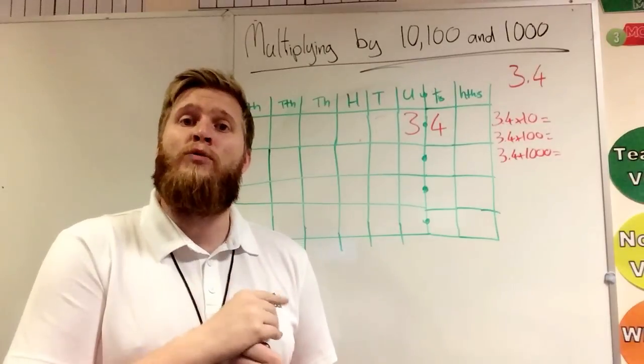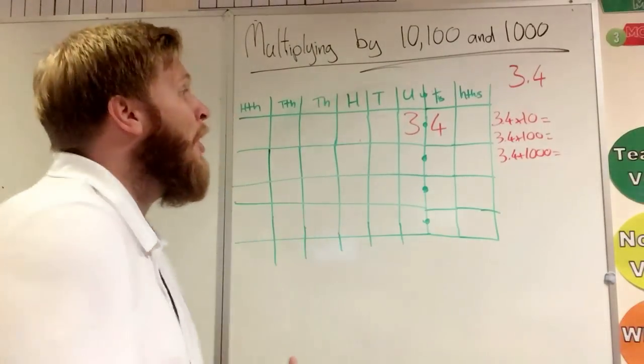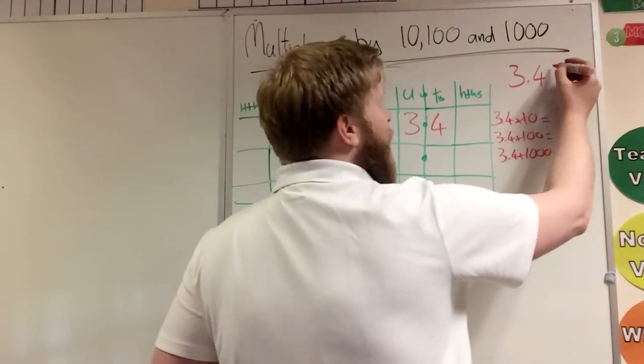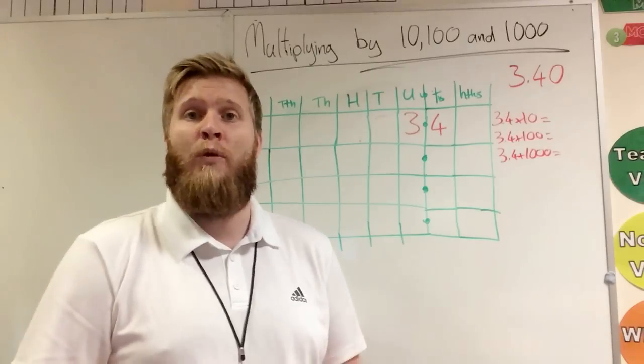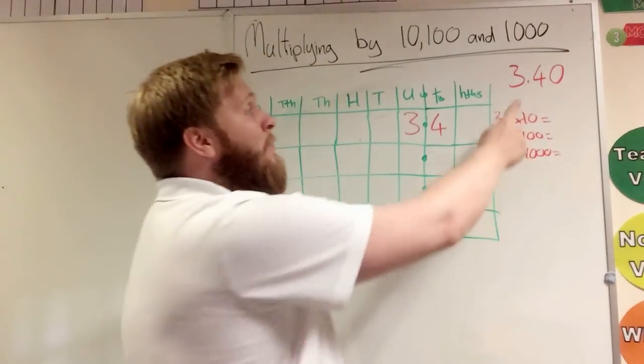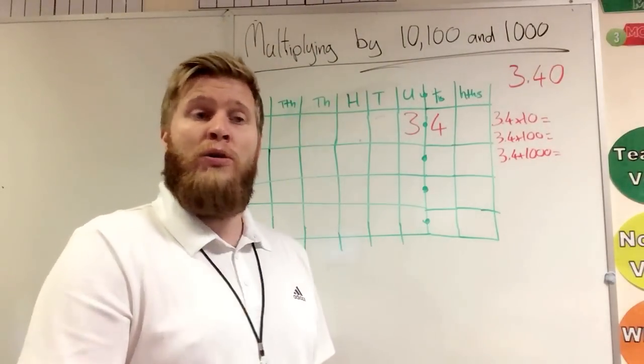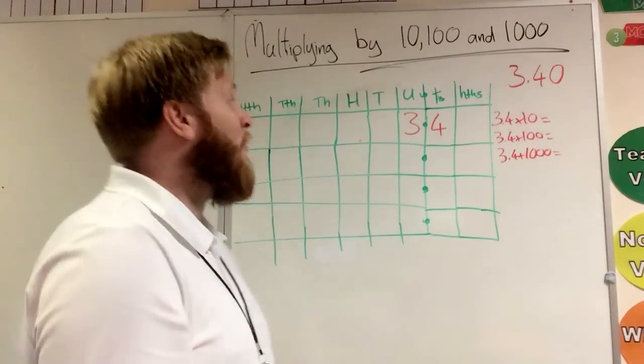So here is why it is important that we know we don't just add a zero. Here, we're going to look at the number 3.4. So it's not a whole number. If I just add a zero at 3.4 times by ten, I get 3.40. That is the same number. And we know a number times by ten isn't going to be the same number. So I'll show you with moving one place up in our place value how it works.